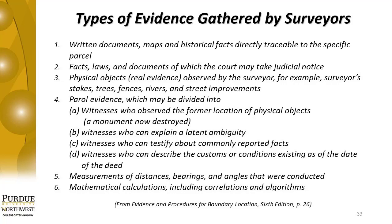Section 2-9 covers the types of evidence gathered by and considered by surveyors. Evidence used by surveyors to prove boundary or deed line locations can be placed in the following categories. Before any evidence can be used or considered, it first must be tied to a written document or documents in the chain of title. These can be any of the following six categories.